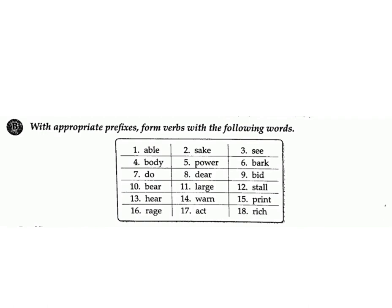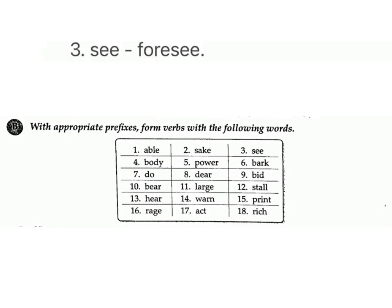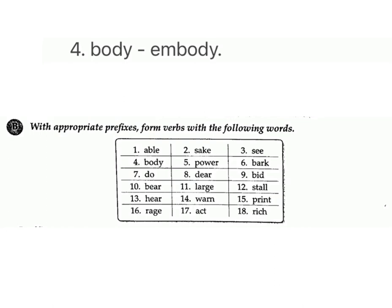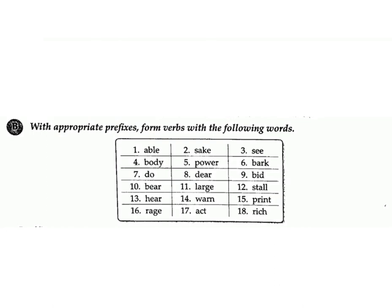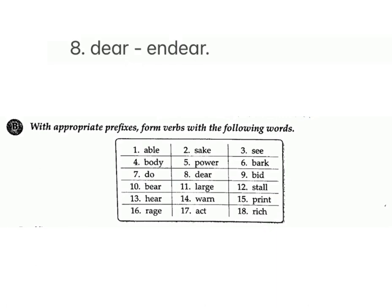B: with appropriate prefixes, form verbs with the following words. 1. able – enable; 2. sake – forsake; 3. see – foresee; 4. body – embody; 5. power – empower; 6. bark – embark; 7. do – overdo; 8. dear – endear.